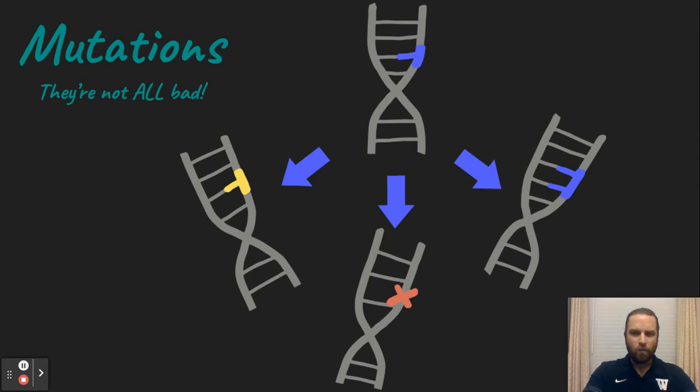So mutations, what do they look like? So the top is a normal strand of DNA and mutations can happen and sometimes they're bad. Sometimes they're not so bad. Sometimes they're devastating.